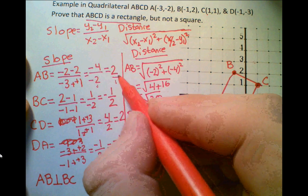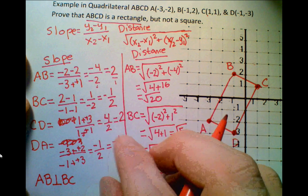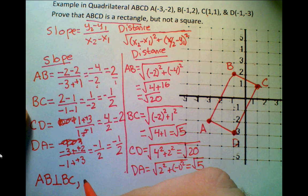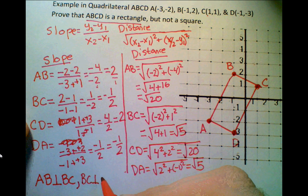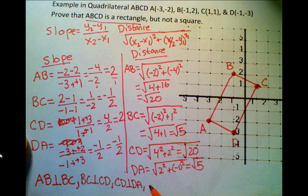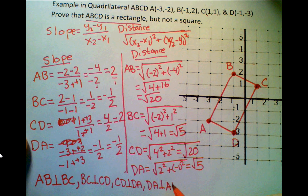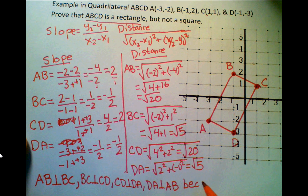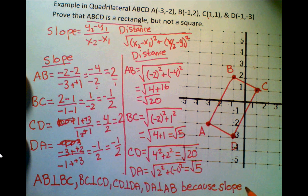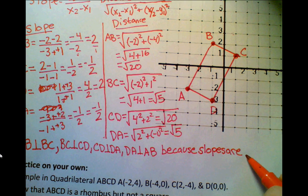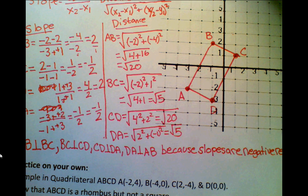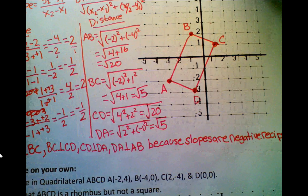And negate it, it becomes -1 over 2. So therefore, I can say that AB is perpendicular to BC. I can say BC is perpendicular to CD. CD is perpendicular to DA. And DA is perpendicular to AB. And the reason is because the slopes are negative reciprocals of one another.